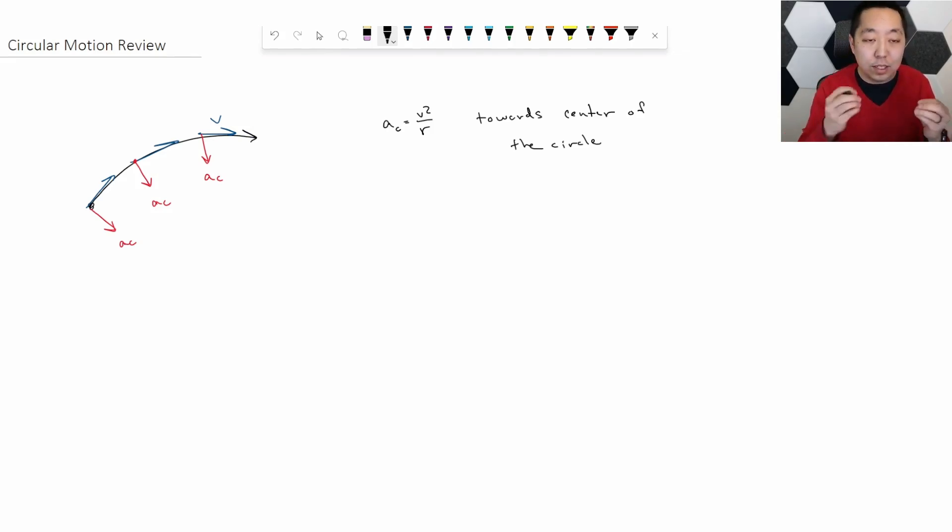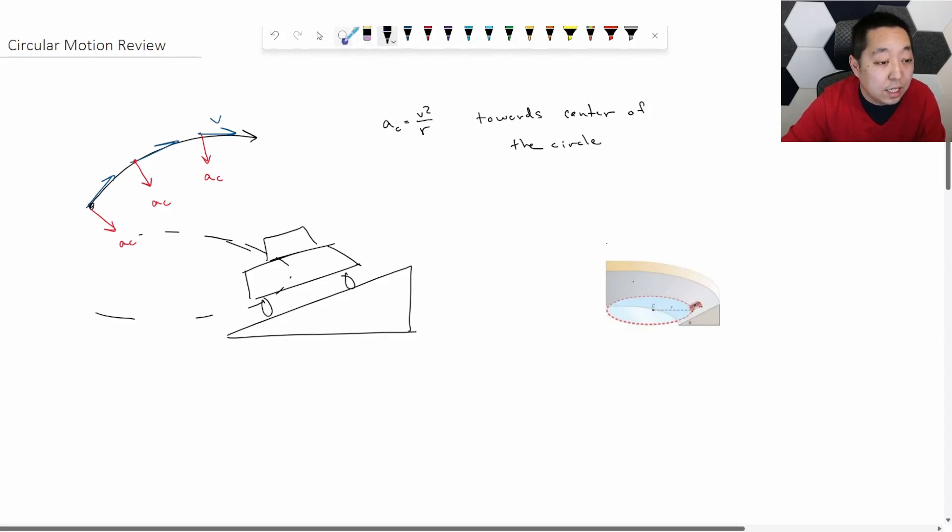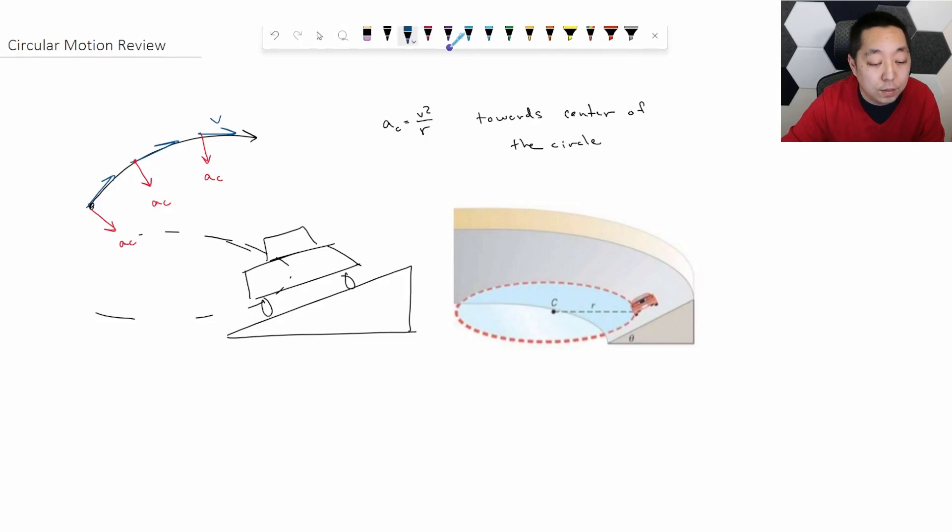The other thing that you might run into in terms of review overall is banked motion. Banked motion are cars that they're making a turn. So banked roads - this is a topic that hasn't been tested as much lately, but it's a car that's moving in a circular path here. Let me see if I can find a good picture of it. But what's happening is the car is inclined. And this is more of an application of circular motion. It's not very difficult, but we have a car that's moving here.